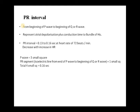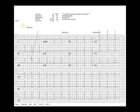The PR interval decreases with an increase in heart rate and vice versa. On this ECG you can see the P wave is 2 to 3 small squares and the total PR interval is 4 small squares. The upper part of the ECG shows the PR interval is 120 milliseconds — that is approximately 3 small squares, or 0.12 seconds.